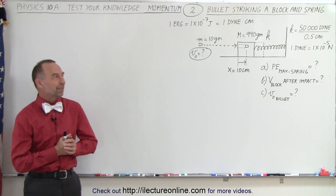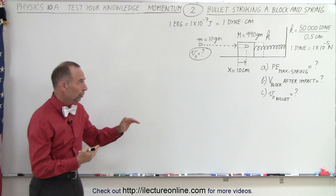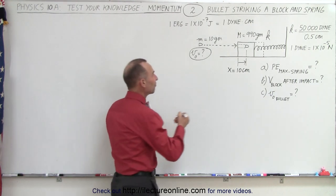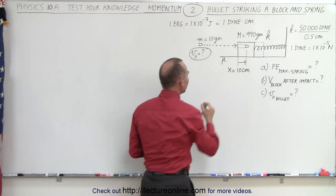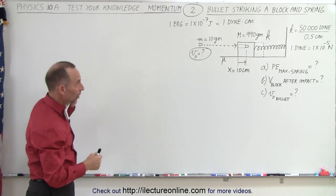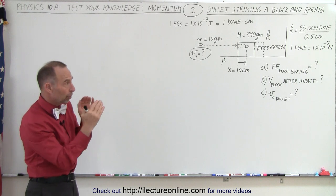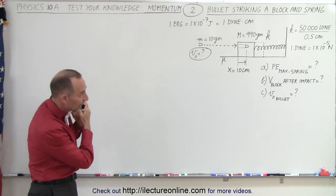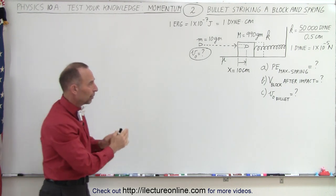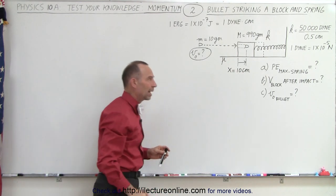Welcome to ElectroOnline. We're going to do a problem where we're firing a bullet towards a block. The block is sitting on a frictionless horizontal plane and is attached to a spring. As the bullet hits the block, it doesn't go through — it gets embedded in the block and pushes the block into the spring. The spring compresses a total of 10 centimeters before the block gets pushed back.